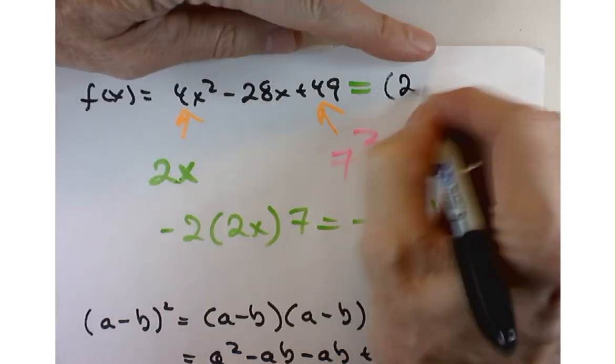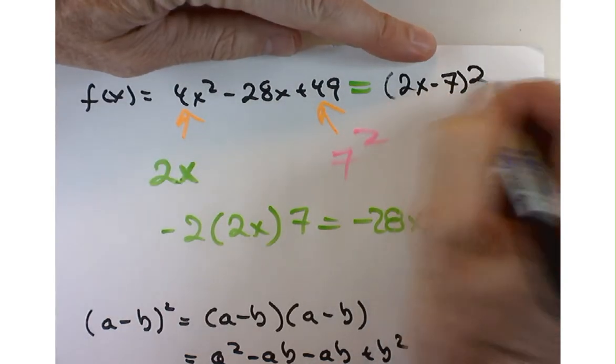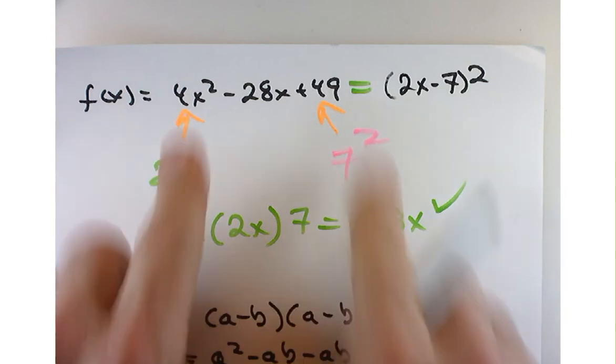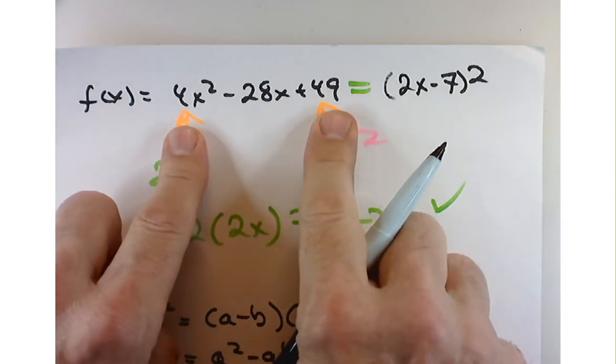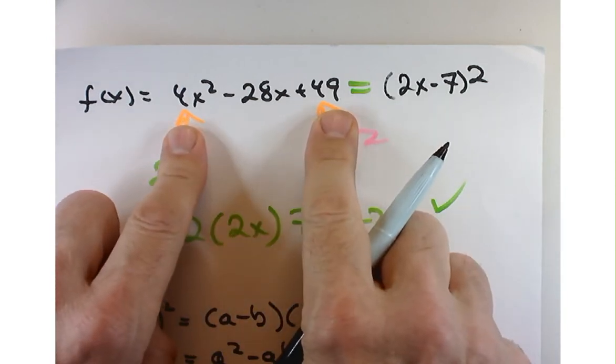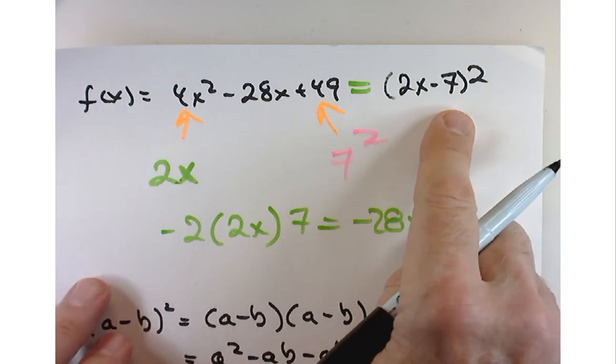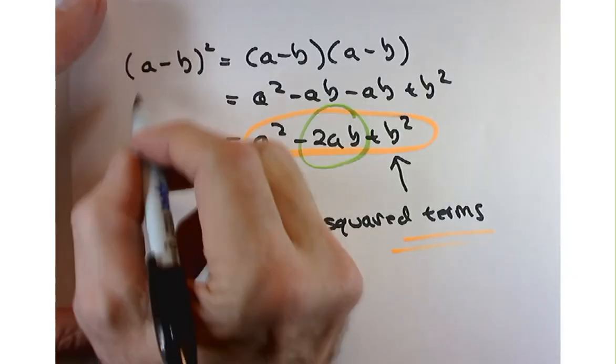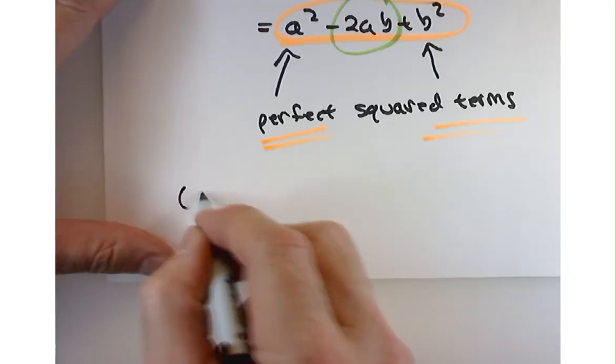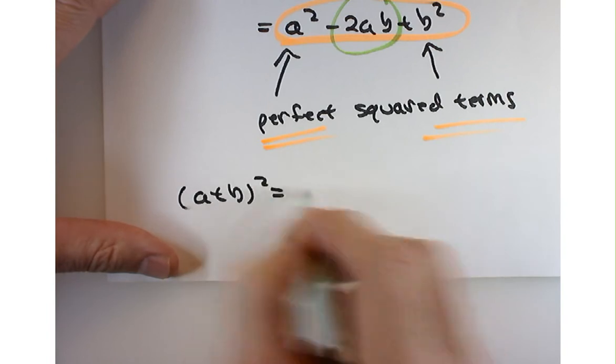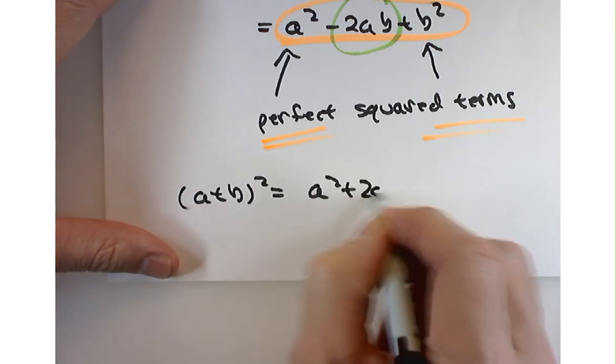It's 2x minus 7 squared. So if you see the end terms are perfect squares, then see if it can't factor, as maybe, you know, a minus b squared or a plus b squared would be pretty similar as just a positive here.